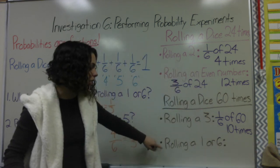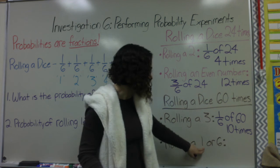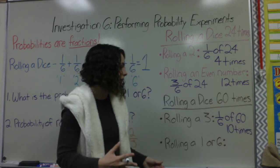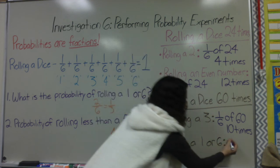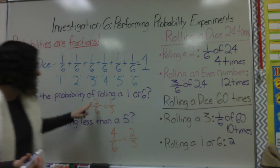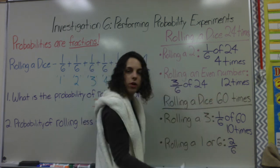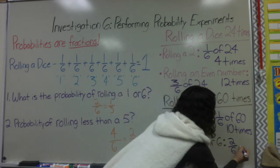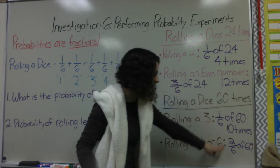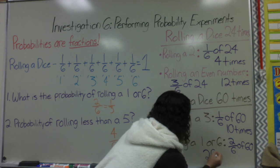How many times would I roll the number 1 or the number 6 if I were to roll the dice 60 times? Rolling the number 1 is 1/6 and rolling the number 6 is also 1/6 — that's my probability. I want to find what 2/6 of 60 is, because 2/6 is my probability of rolling those numbers. Now 1/6 of 60 is 10, so if I want 2/6, I need to double this. That means I would possibly roll a 1 or a 6 twenty times.